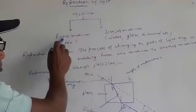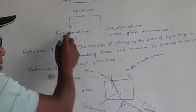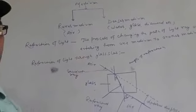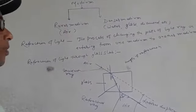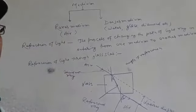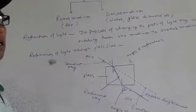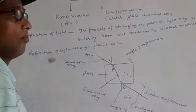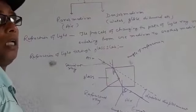It is clear from the name — rarer medium means such a substance in which light can travel faster. If anyone asks you what is rarer medium, very simply we can say: medium or material in which light can travel faster. Similarly, denser medium is medium or material through which light can travel slower.